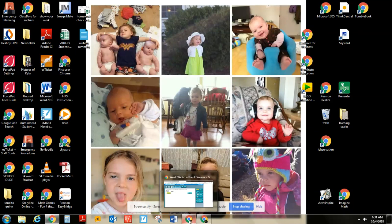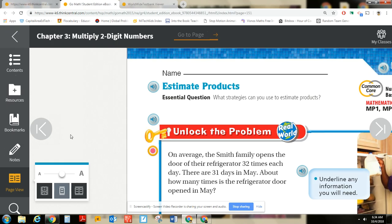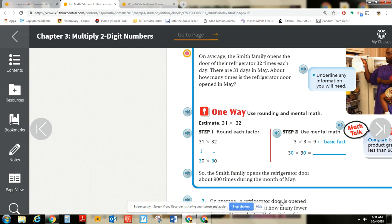Hey, it's Mr. Grable here. So we're going through fourth grade GoMath chapter three, lesson two, and this focuses on estimating products, specifically two-digit by two-digit. So we'll just kind of get into it.